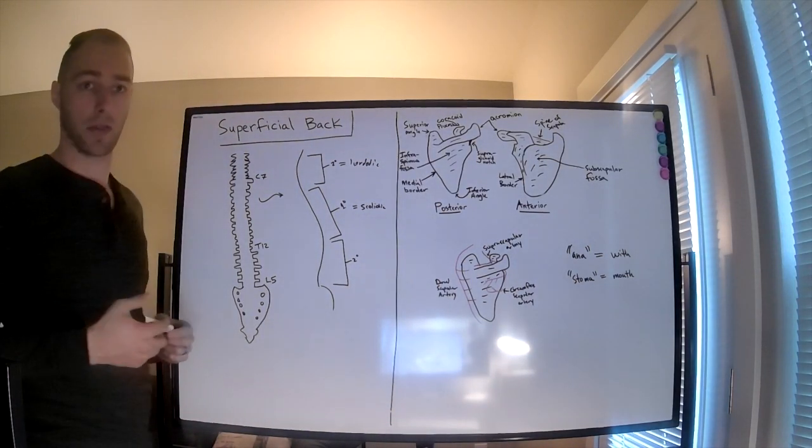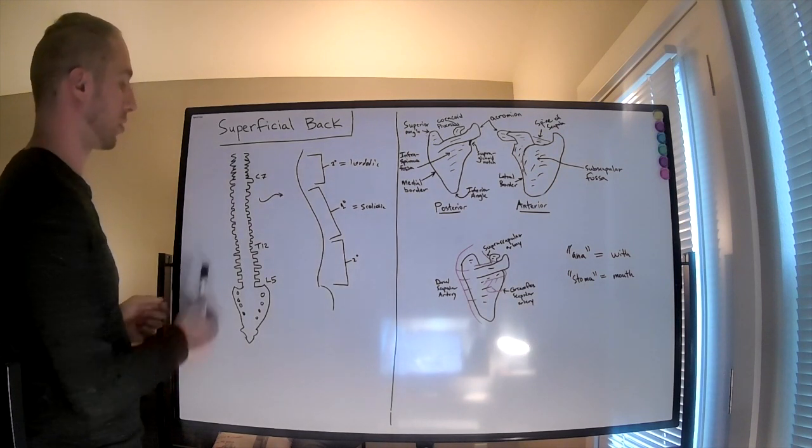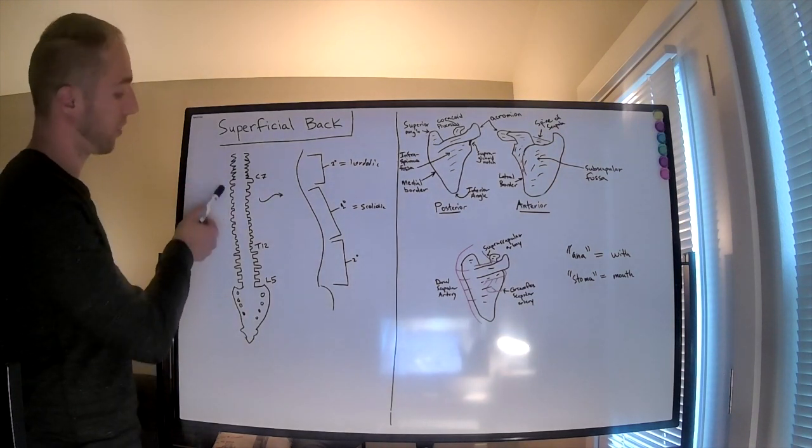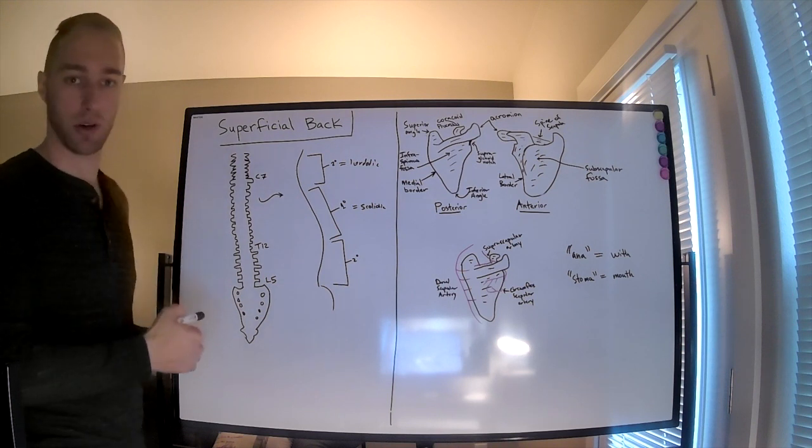All right, let's go ahead and talk about the superficial back. Let's start with the axial skeleton which is divided into cervical, thoracic, and lumbar segments.